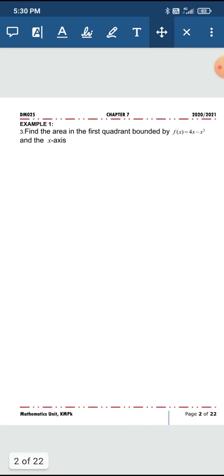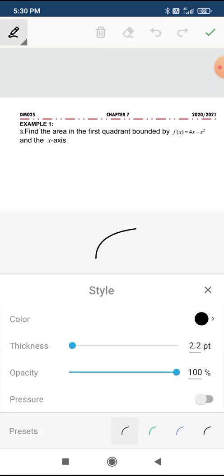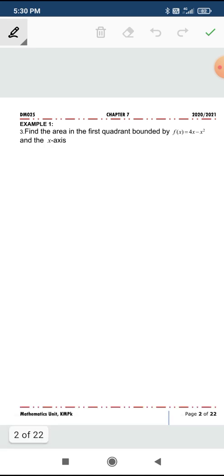f(x) = 4x minus x squared and the x-axis. Your function, write it down: 4x minus x squared.